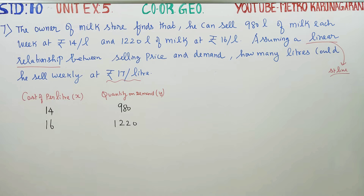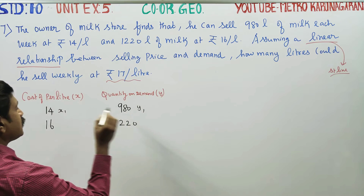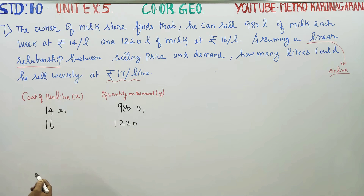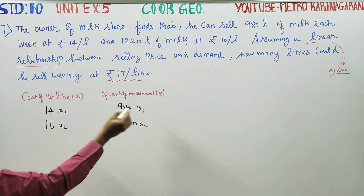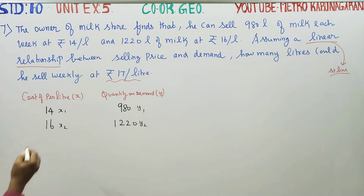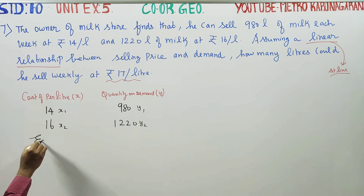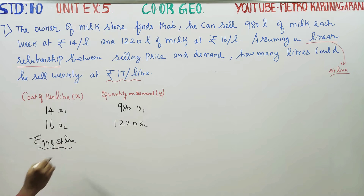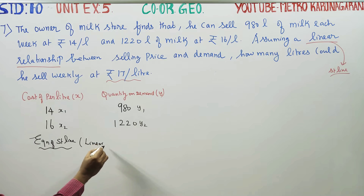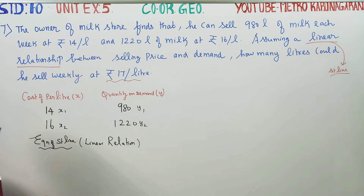For the second data point: at 16 rupees per litre, the demand is 1220 litres of milk. Since there is a linear relationship, we use the two-point form of the equation of a straight line.